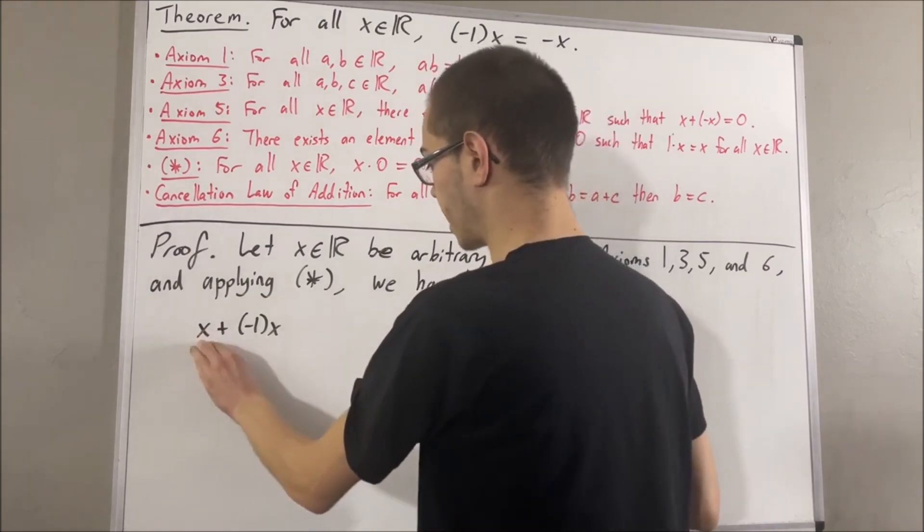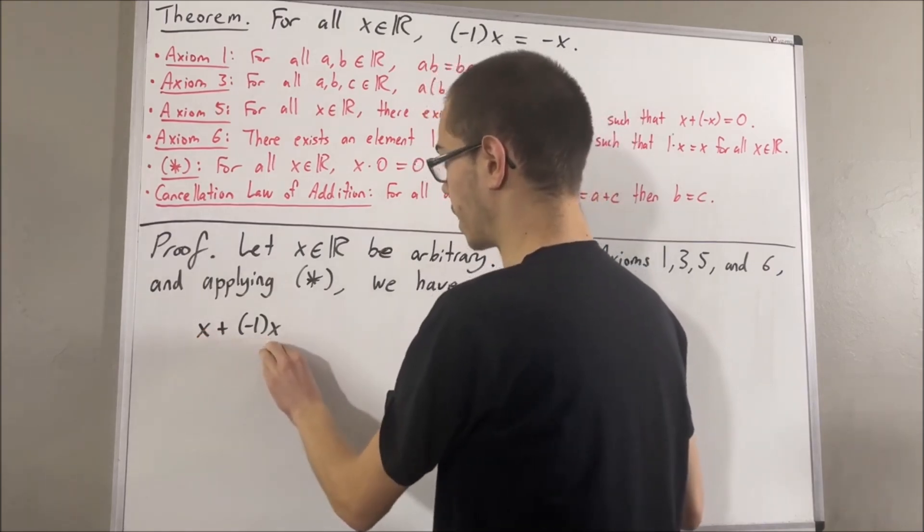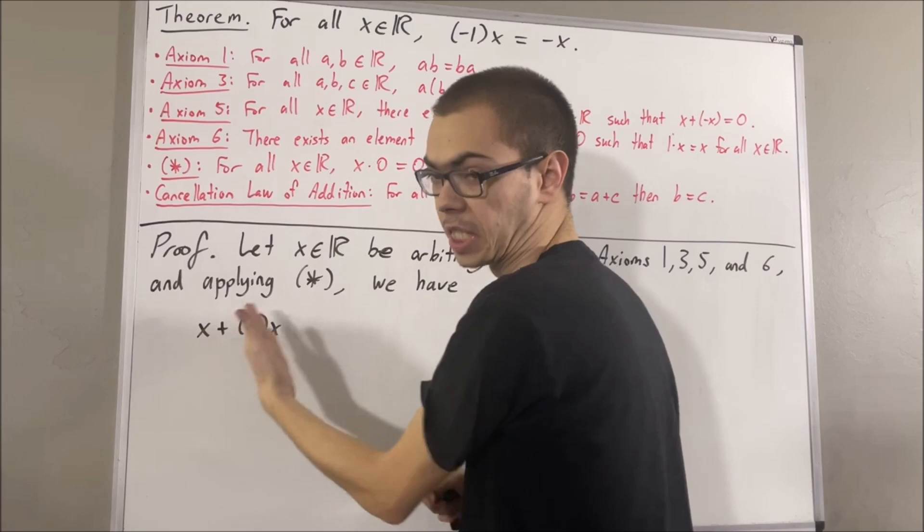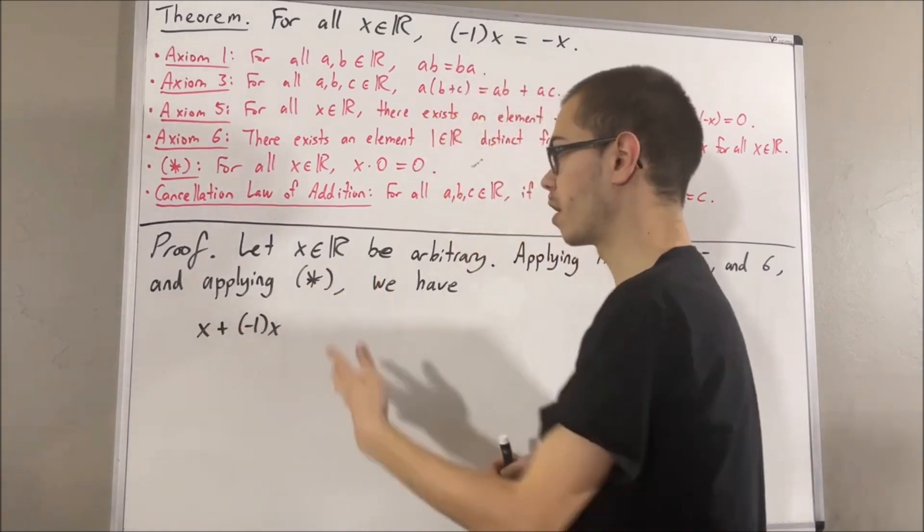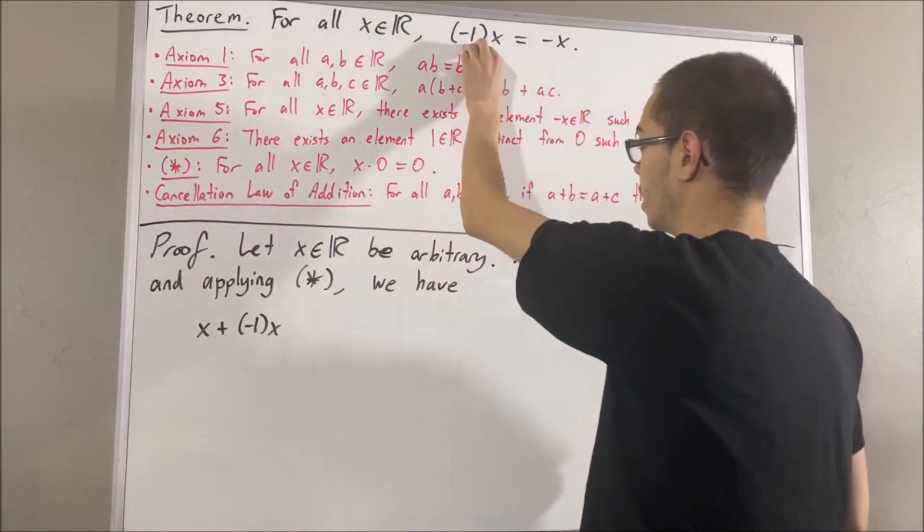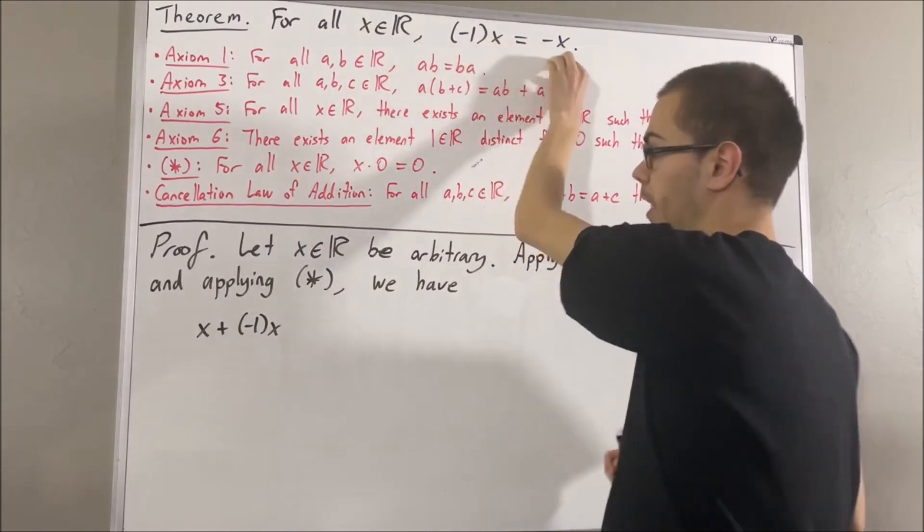The idea is we can show that x plus the negative of 1 times x is equal to x plus the negative of x. From there, we apply the cancellation law of addition to conclude negative 1 times x is equal to negative x.